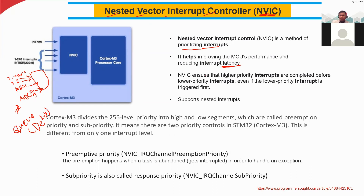NVIC ensures that higher priority interrupts are completed before lower priority interrupts, even if the lower priority interrupt is triggered first. We got the interrupt request from timer one first, but we got the interrupt from ADC two at the last. Since ADC two has high priority and timer one has low priority, we execute the high-priority one first.